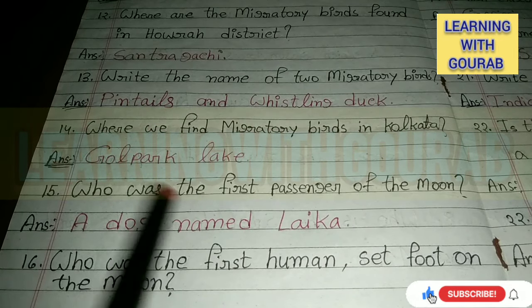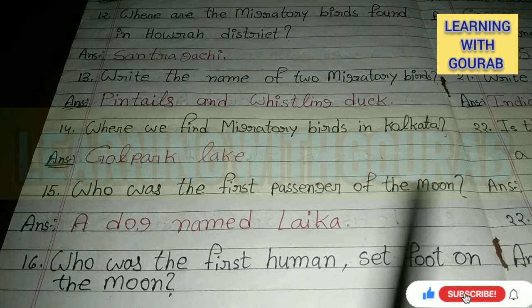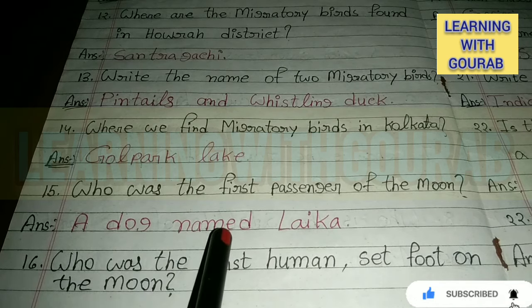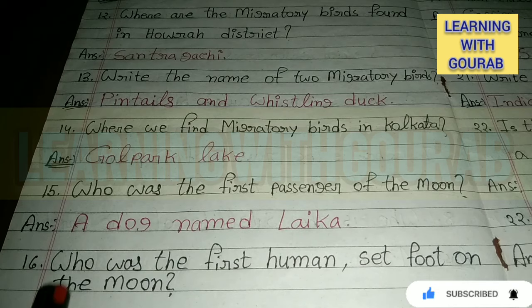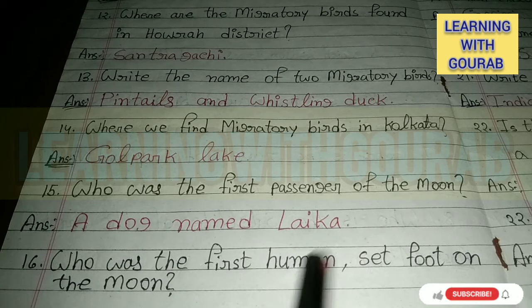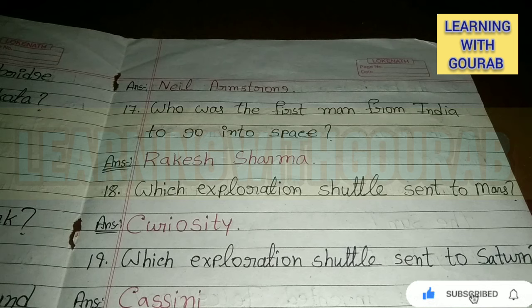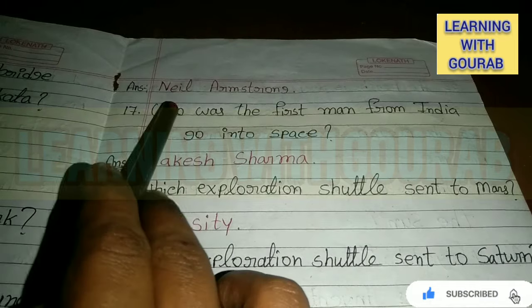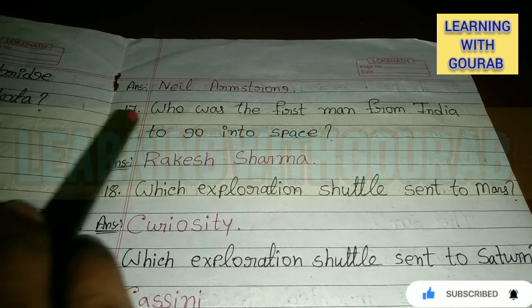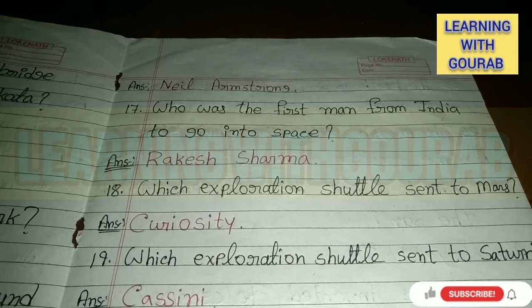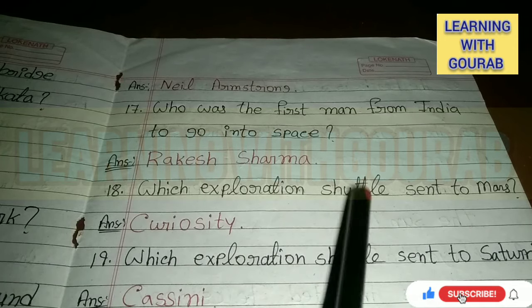Who was the first passenger of the Moon? Answer: A dog named Laika. Who was the first human to set foot on the Moon? Answer: Neil Armstrong. Who was the first man from India to go into space? Answer: Rakesh Sharma.